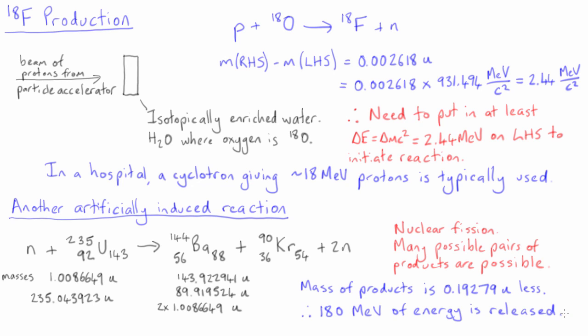This energy is primarily released in the form of kinetic energy of the products. The very large energy released from this process is the basis of a nuclear fission reactor, and this will be discussed in detail in the next lecture.